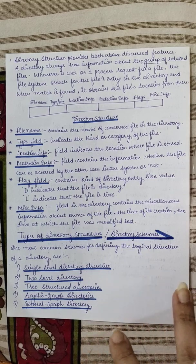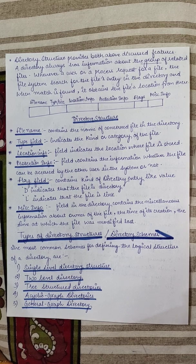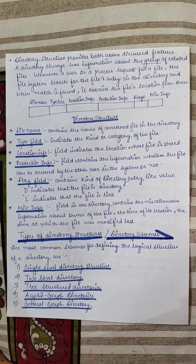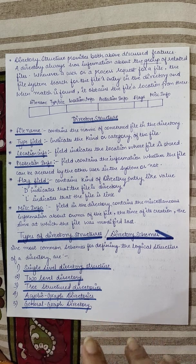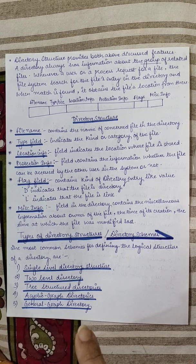When a match is found, the system obtains the file location. The directory structure contains fields such as file name — used to search the directory — and type field, which indicates the category of the file such as executable or text. Location information indicates the path or URL. Protection information indicates access rights such as read, write, and execute. The flag field indicates whether an entry is a directory or a link.